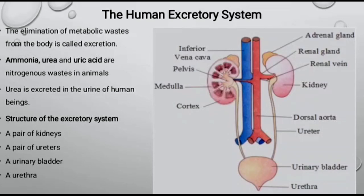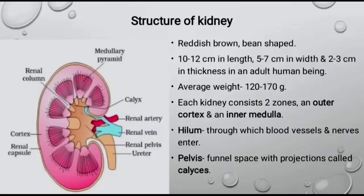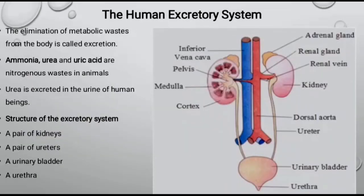While mammals, marine fishes and many terrestrial amphibians excrete urea and are called ureotelic animals. The major excretory product in human beings is urea, which is excreted in urine. Ammonia produced by metabolism is converted into urea in the liver and released into the blood, which is filtered by the kidneys. Other than the kidneys, lungs, liver and skin also help in waste removal. The excretory system of human beings consists of a pair of kidneys, a pair of ureters, a urinary bladder and a urethra.